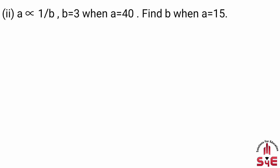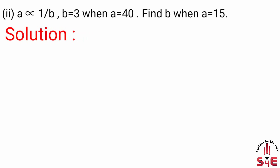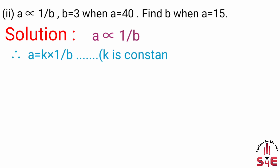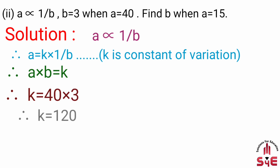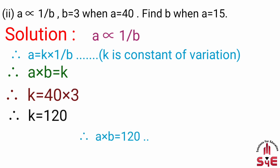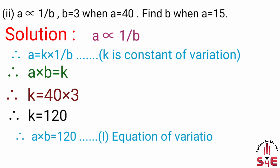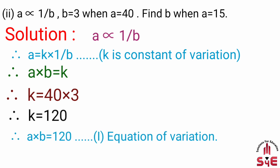Agar a is equal to 15 ho, tab humko b maalum karna hai. Solution: Given that a is inversely proportional to b, so a is equal to k into 1 upon b, so a into b is equal to k. A aur b ki value put karne par k is equal to 40 into 3, so k is equal to 120. So we get a into b is equal to 120.